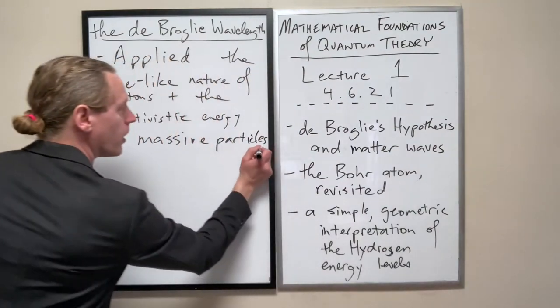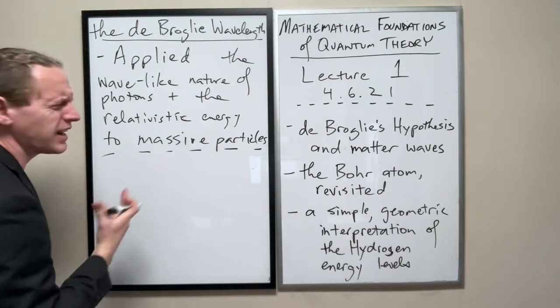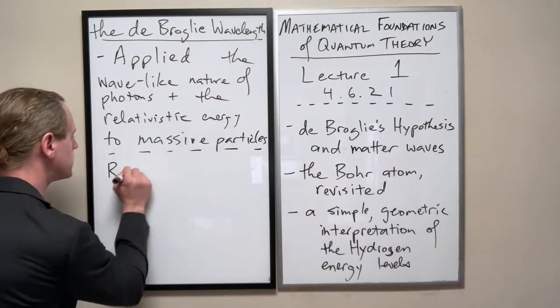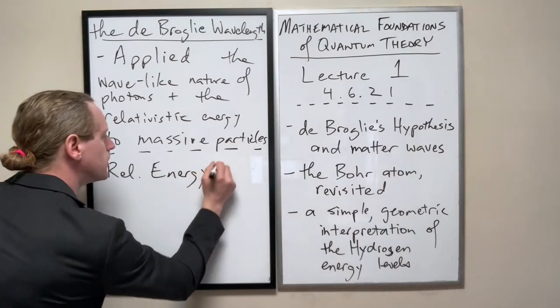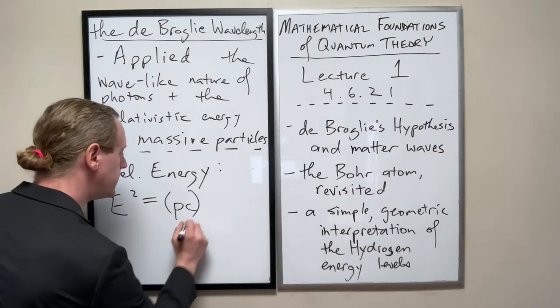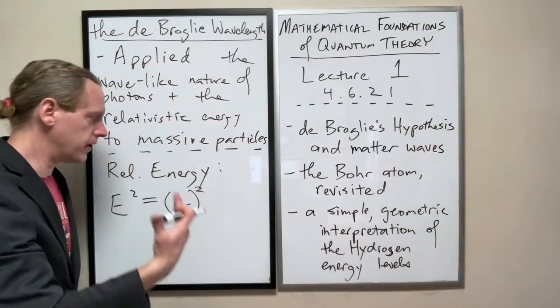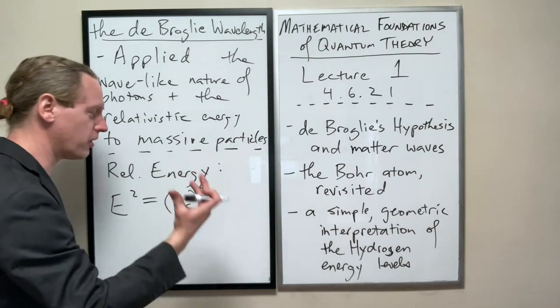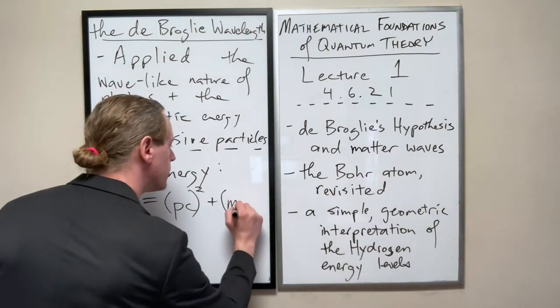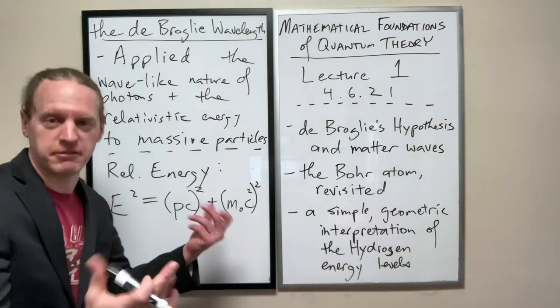First of all, as we may have forgotten, the relativistic energy that Einstein had derived from his theory, or not so much derived, he had just guessed and it's right we think. The relativistic energy looks like E squared equals, now this first term, PC squared, this essentially refers to the kinetic energy of a thing, plus this term here m₀c² squared. This refers to the rest energy of a massive thing specifically.